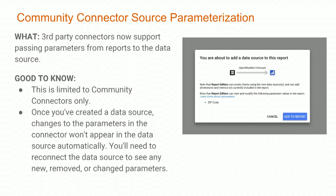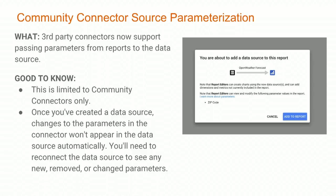Next, we have Community Connector Source Parameterization. Our third-party connectors now support passing parameters from reports to our data source. It's limited to Community Connectors only, and once you've created a data source, any changes you make to the parameters won't automatically work — you'll need to reconnect that data source. For example, if you have a dashboard with weather and location information for a particular zip code, you can now make that zip code your source parameter and change it out anytime, rather than creating a separate dashboard for each zip code.